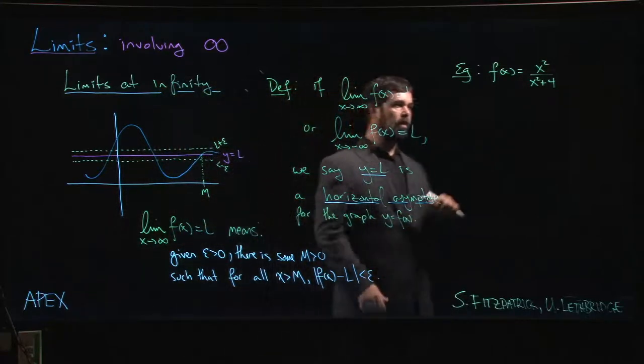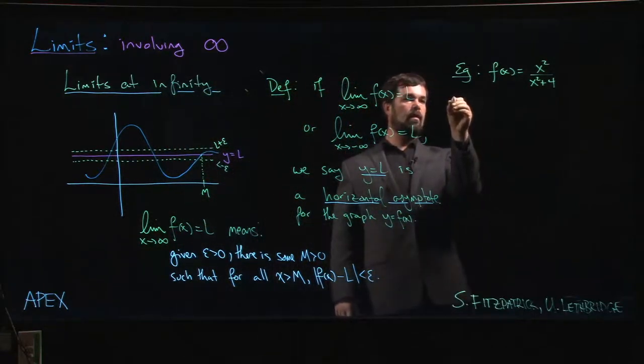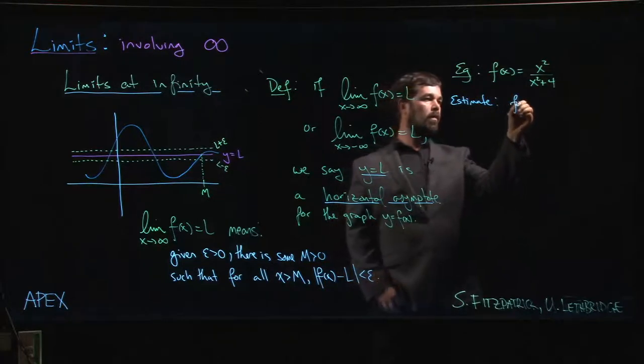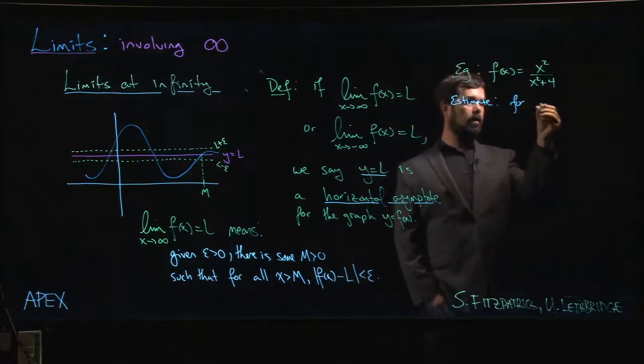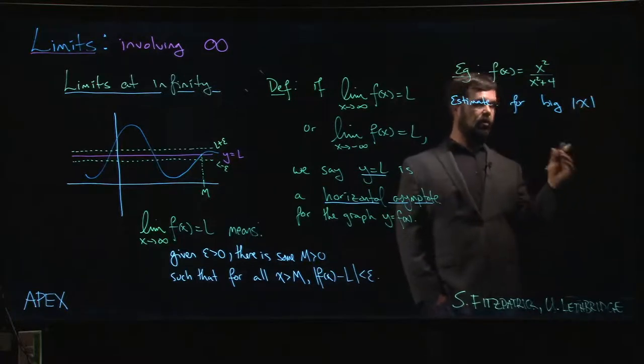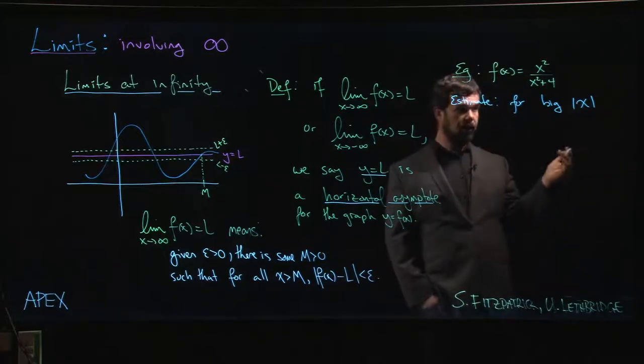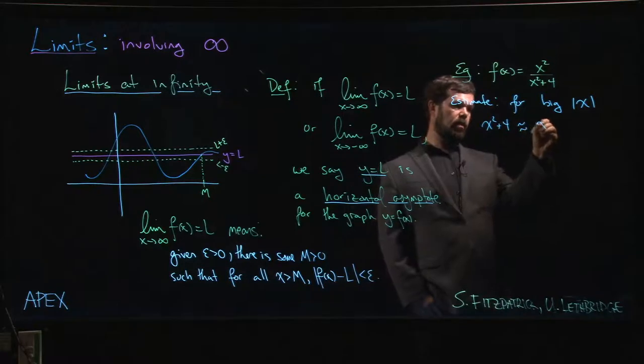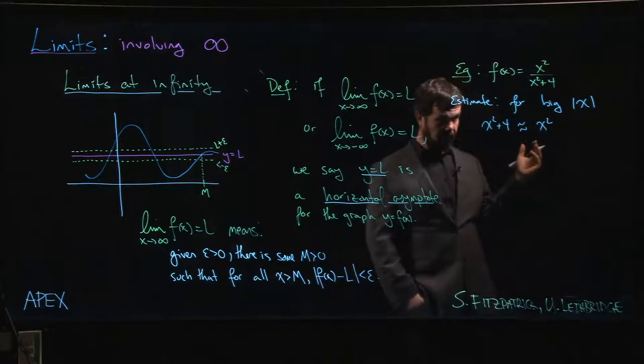So one of the things we can do is we can estimate. We can say that for big x, and actually for big absolute value of x, whether it's big and positive or big and negative, it's fair to say that x squared plus 4 is not that different from x squared.